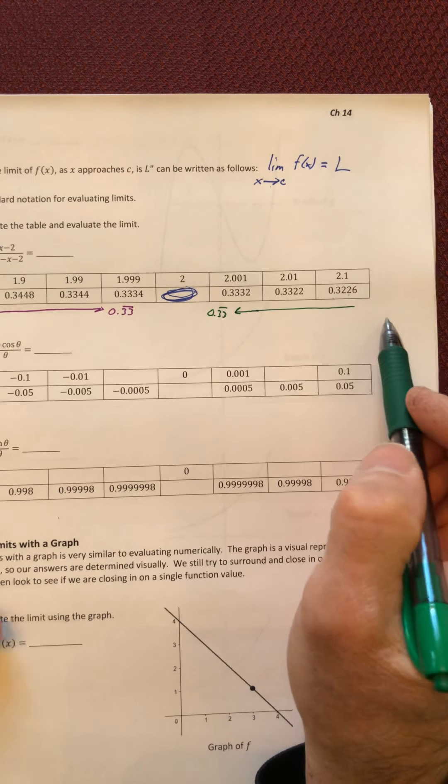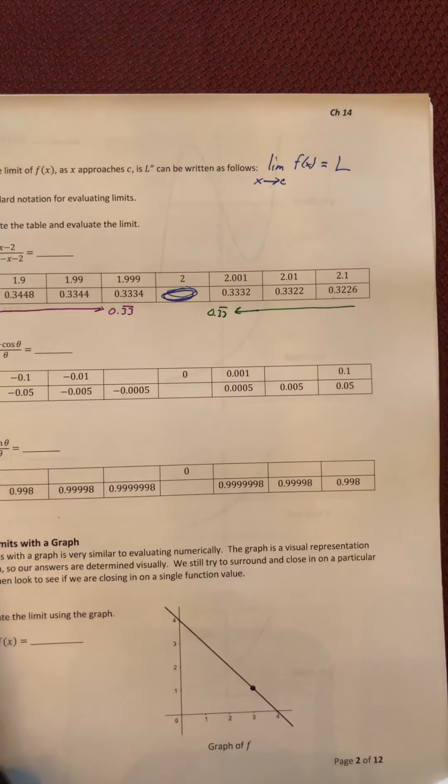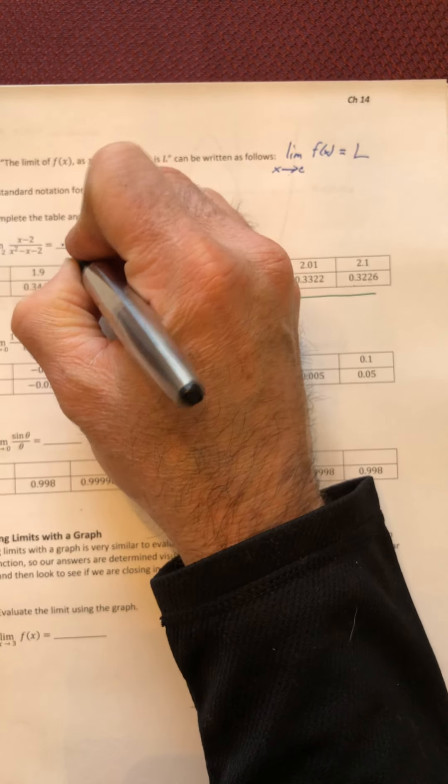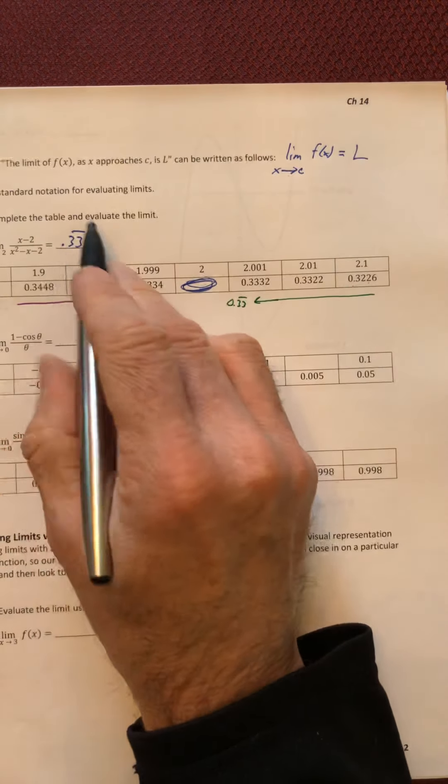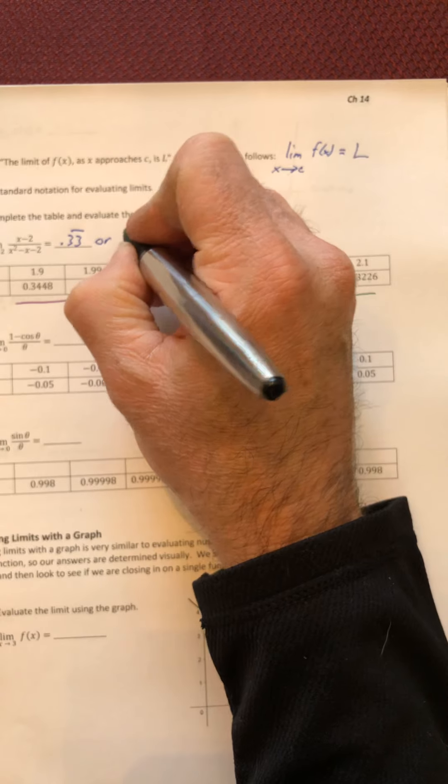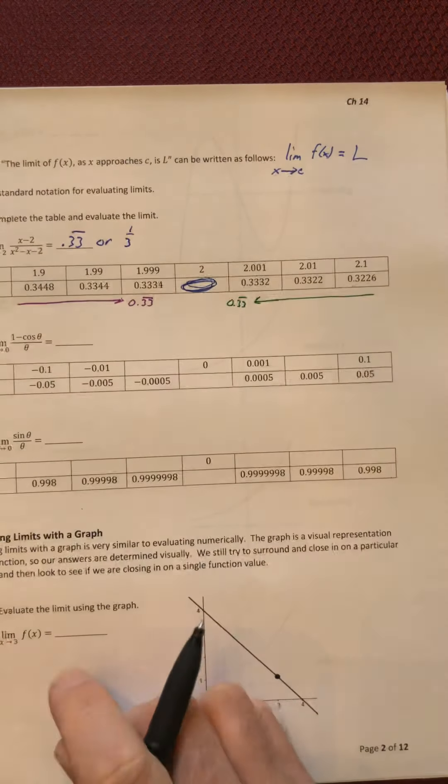I would say the same thing: 0.33 with the bar, because they keep adding in an extra three as well. So both sides are approaching 0.333 repeating, so that is what the limit is going to equal. And if you don't like that as a decimal like 0.333333, you can also say it's a third.